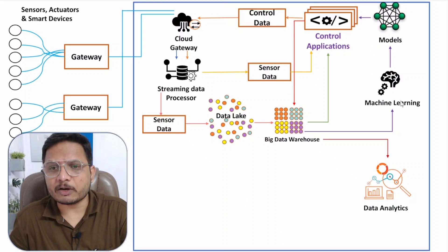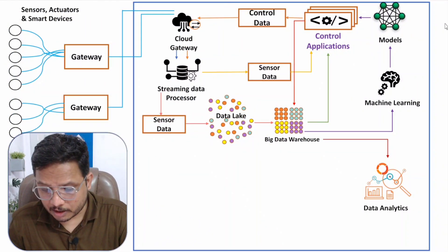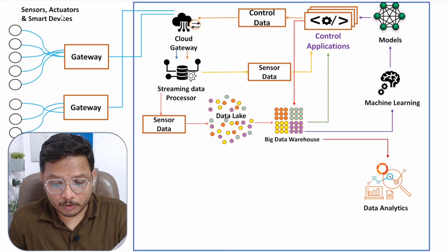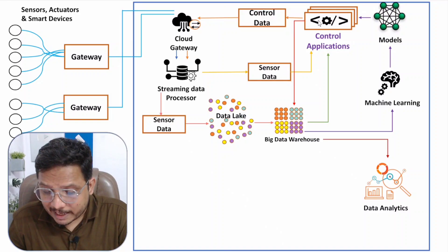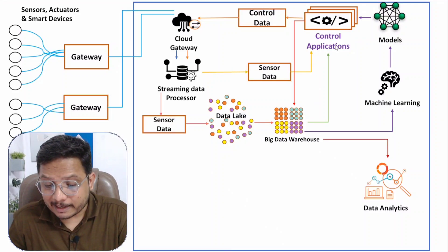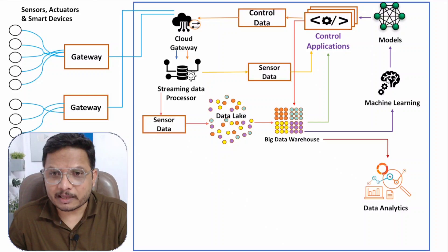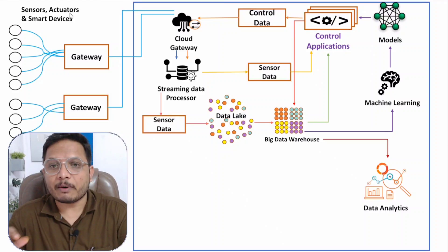The control application gives commands to actuators based on stored programs. It takes inputs from real-time sensor data, the big data warehouse, and high-end technologies like machine learning or deep learning. Based on these inputs, it determines parameters and issues commands that drive the physical response of IoT applications.